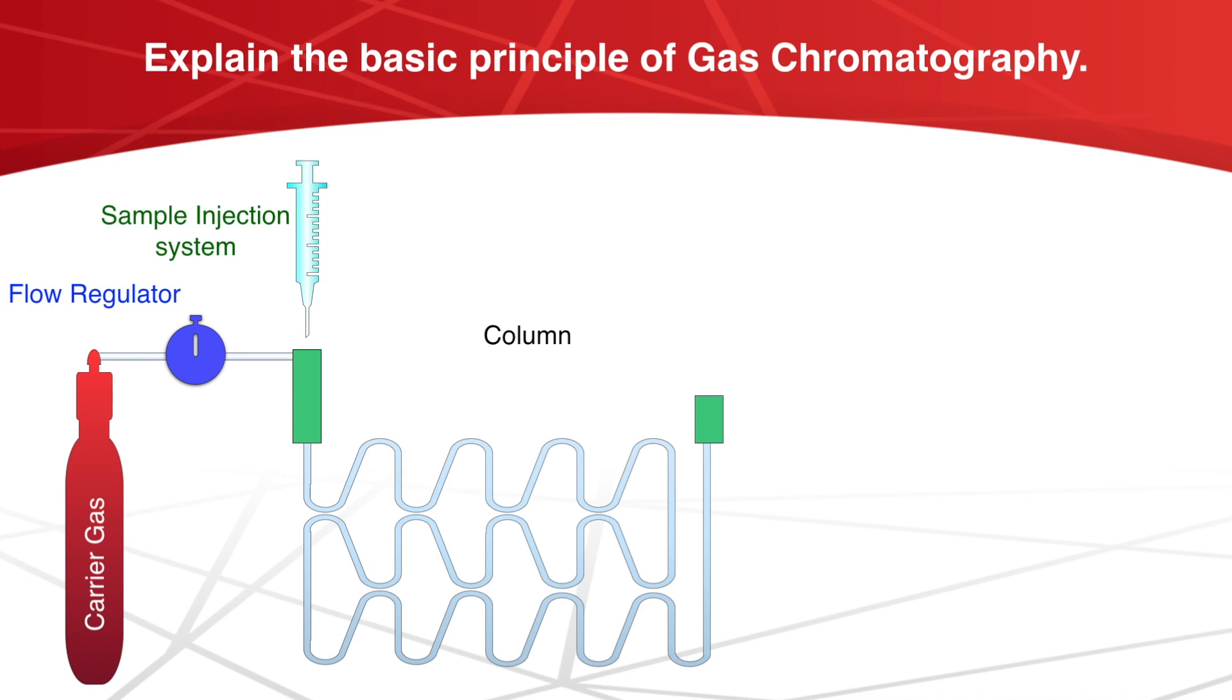Then comes column. The column is generally made up of glass or stainless steel depending upon the chemical reactivity of the substances to be separated. Columns are from 1 to 20 meters long and they are usually coiled. The internal diameter of the column is generally about 4 mm.